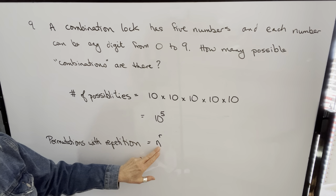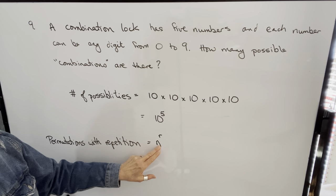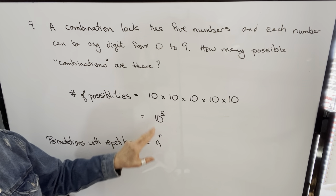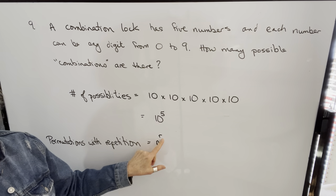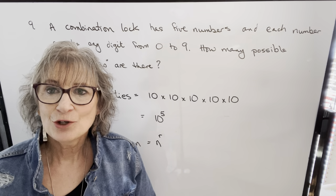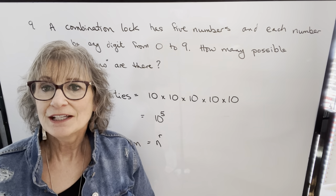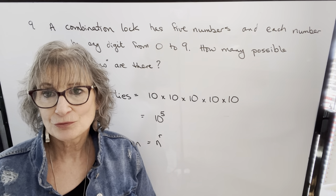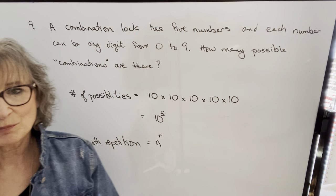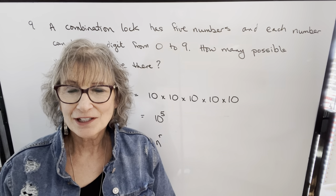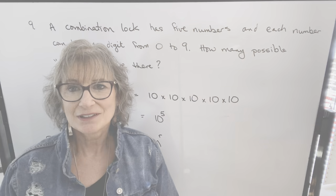So we can use the formula n to the r when doing permutations with repetition, where n represents the number we can choose from — in the lock example, 10 digits — and r is the number of times we're choosing. I hope these examples help you get more comfortable determining when to use a combination formula, when to use permutation, or when to use permutation with repetition. I always like to look at these questions logically, and that helps me determine how to set it up.